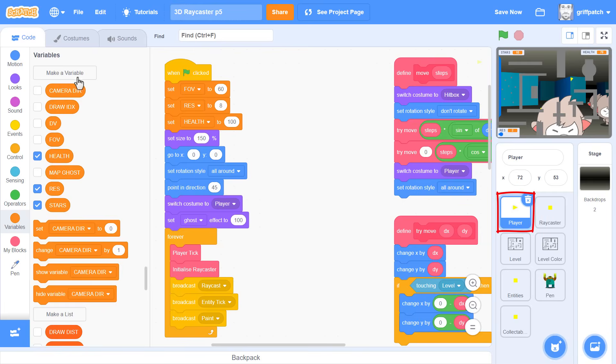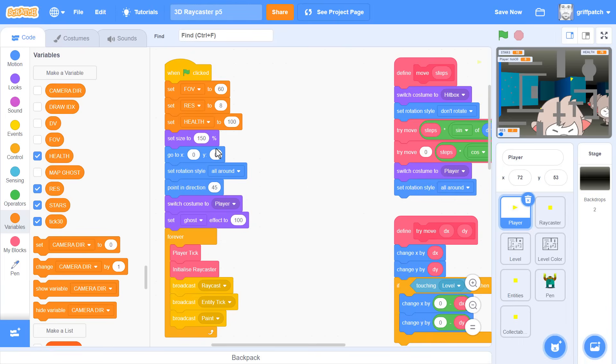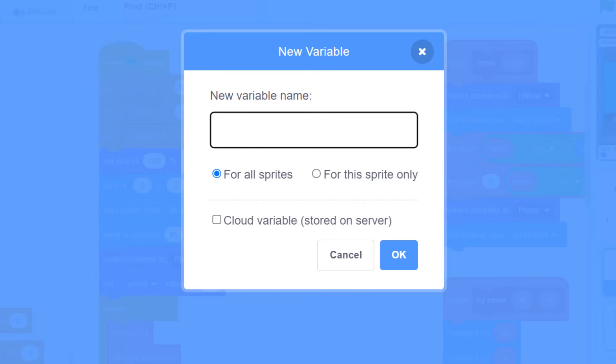In the player sprite we need 3 new variables. The first one, tick 30. This will keep track of the current time in 30ths of a second. Scratch's default refresh rate. Make it for this sprite only. Next up, another variable named delta, leaving it for all sprites.